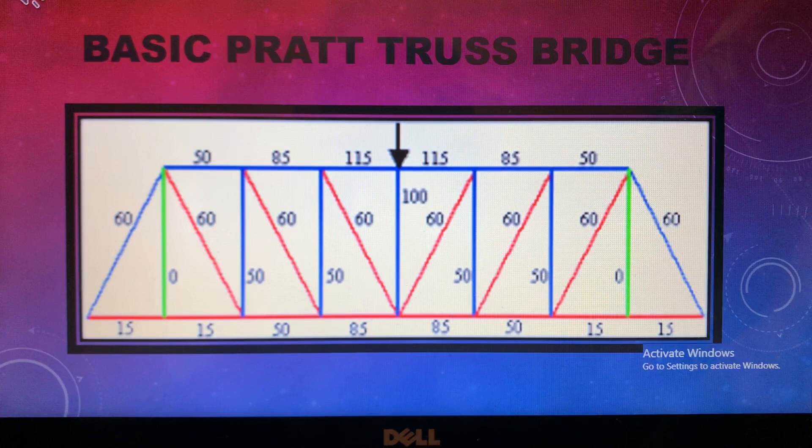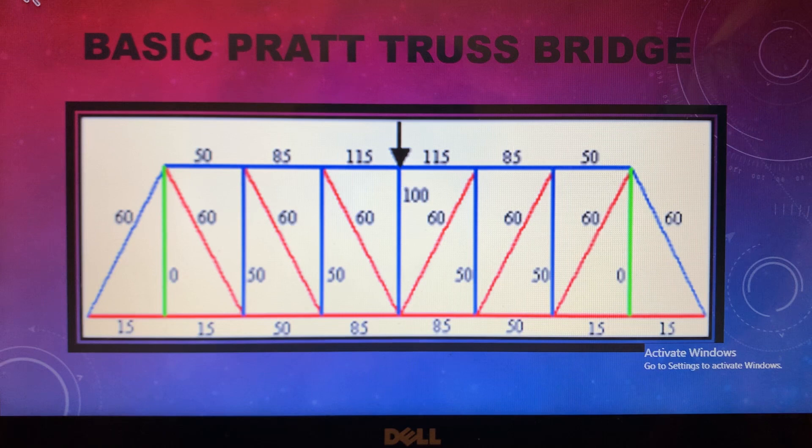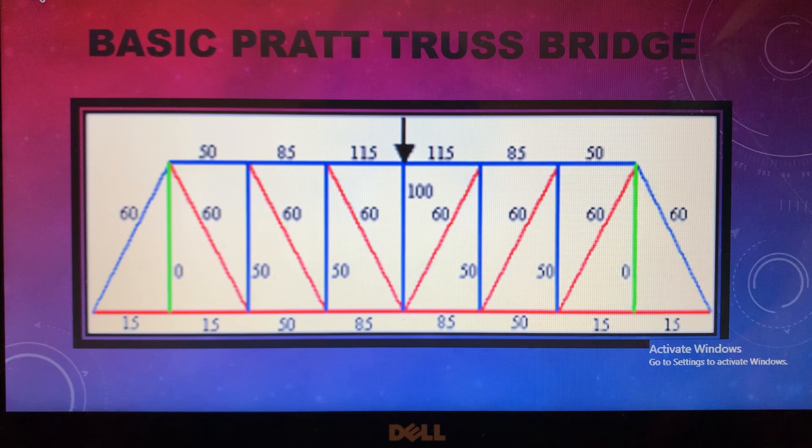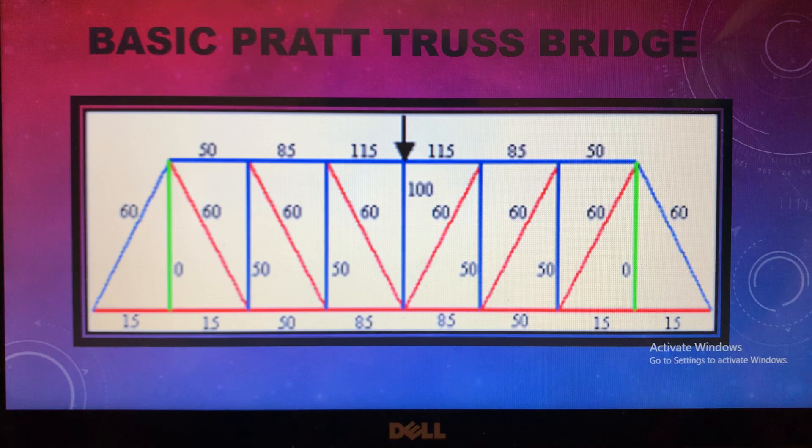This diagram is for the Pratt truss bridge. Again, the blue lines represent compression and the red lines represent tension. The good thing about the Pratt truss bridge is that it can support a lot of weight in the middle section, which allows for heavy traffic — meaning if cars are on it, the bridge will not snap in half.